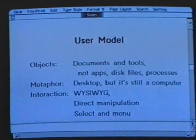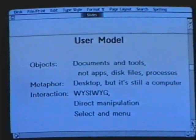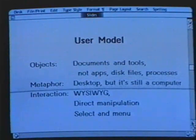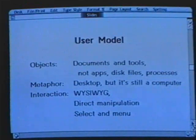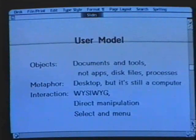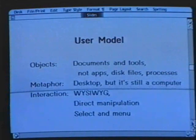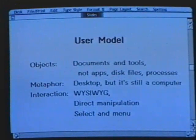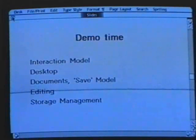As with the Star, and probably evolving from Smalltalk, the idea was to use an object-oriented desktop — we worked with documents and tools. We didn't talk about applications, disk files, and processes, because those weren't relative to what the user was used to in their environment. It was a desktop metaphor, but we did recognize it was still a computer. Things like disks — because they weren't file cabinets, they were disks, and you had to do certain things with them that you didn't do with file cabinets. The interaction style was WYSIWYG, direct manipulation, and importantly — rather different from the Star — it was select and use a menu. So now we'll drop into the demo.